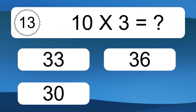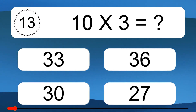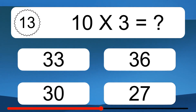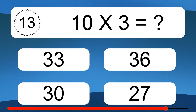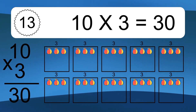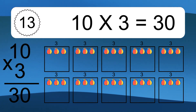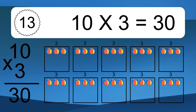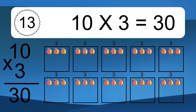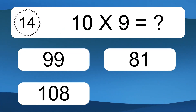10 times 3 equals what? 10 times 3 equals 30. We have 10 boxes, and each box has 3 colorful balls inside. If you count all the balls in all the boxes together, you will have 10 times 3 balls. This equals 30 balls.